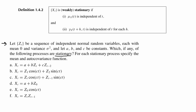This question comes from the Brockwell and Davis time series book where they define stationarity as weak stationarity. There is a definition of weak stationarity and also strict stationarity, but for time series we usually just want to meet the definition of weak stationarity. Weak stationarity is a less strict assumption and it's based on two parts.